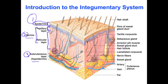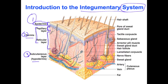The reason we study the integumentary system first is that skin is made up of all four types of tissues. Within the epidermis we have lots of epithelium; in the dermis we have epithelium, connective tissue, and muscle tissue; and in the hypodermis we have connective tissue, blood vessels, and fat. So all four tissue types are represented here.